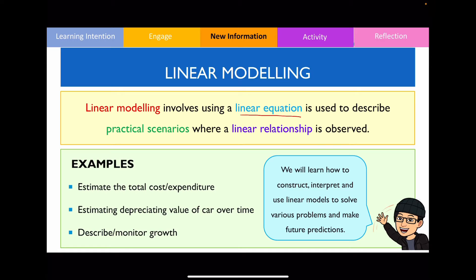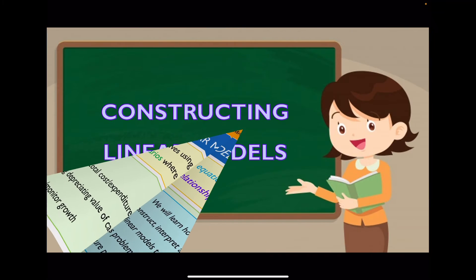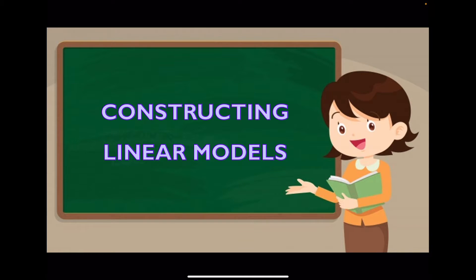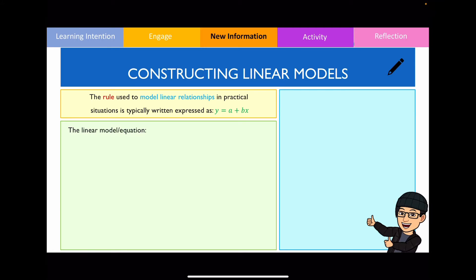In this lesson we will learn how to construct a linear equation, interpret it, and use these models to solve problems and make future predictions. When constructing a linear model, we write an equation in the y equals a plus bx format. Generally the linear equation should contain two variables, and you will also be given two values — one is the constant and the other is your rate.